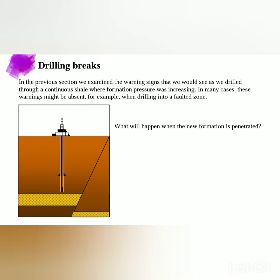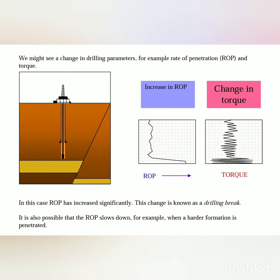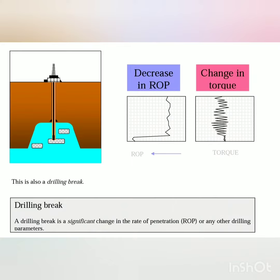What will happen when the new formation is penetrated? We might see a change in drilling parameters, for example rate of penetration (ROP) and torque. In this case ROP has increased significantly — this change is known as a drilling break. It is also possible that the ROP slows down, for example when a harder formation is penetrated. This is also a drilling break.